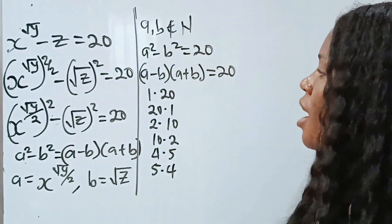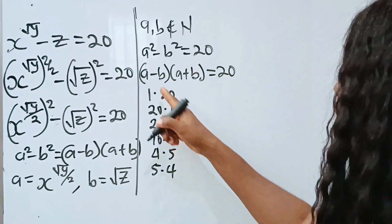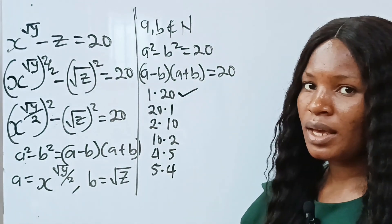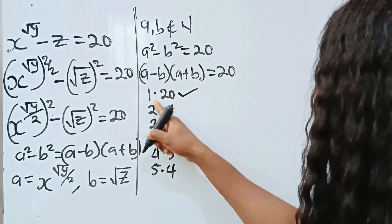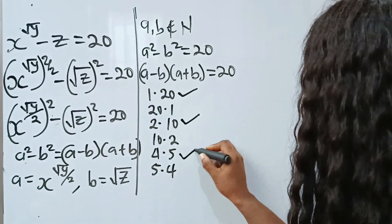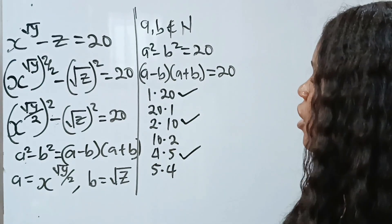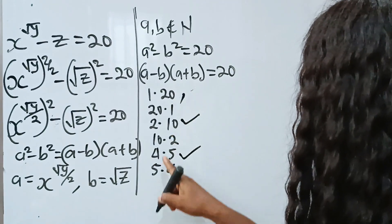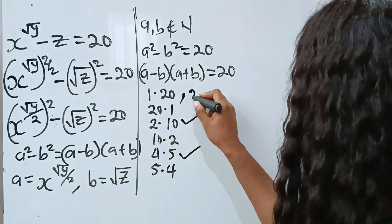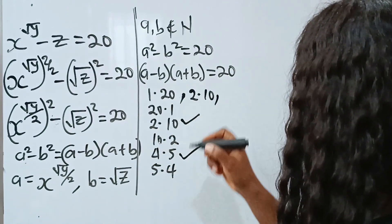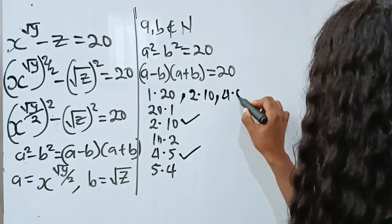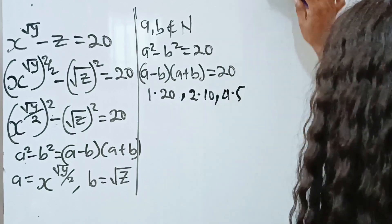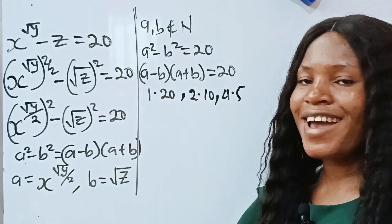Since a and b are natural numbers, that means a minus b has to be less than a plus b. Therefore, we are going to use 1×20, 2×10, and 4×5. The other factor pairs are not needed. Let's go ahead and start.